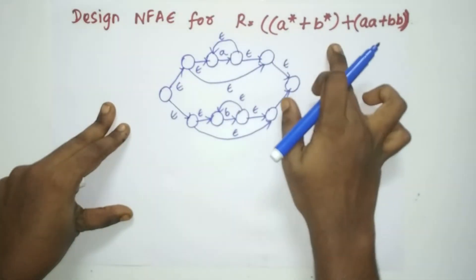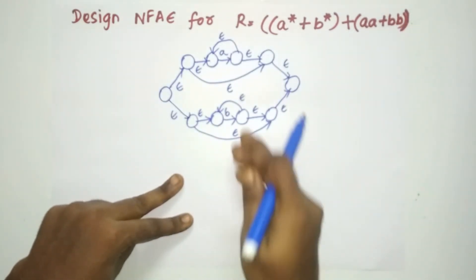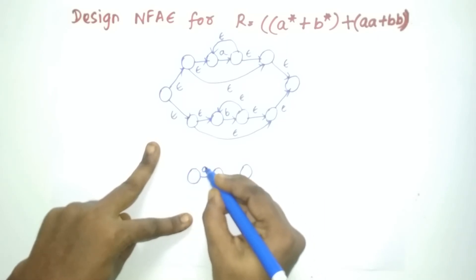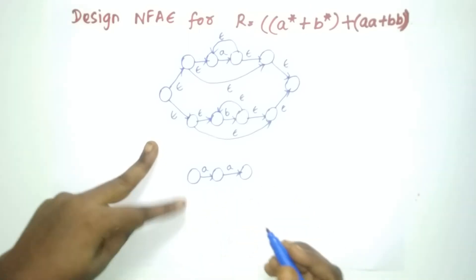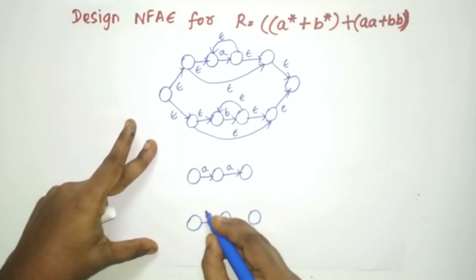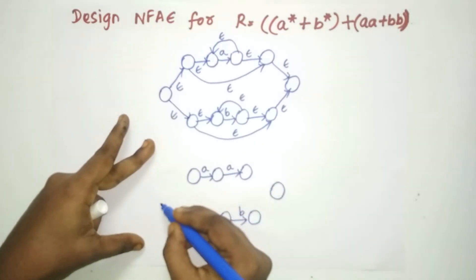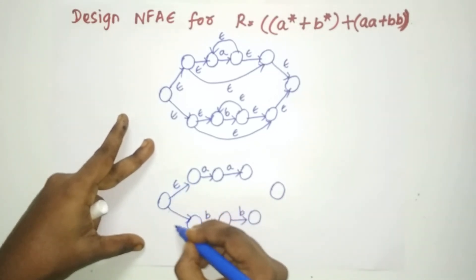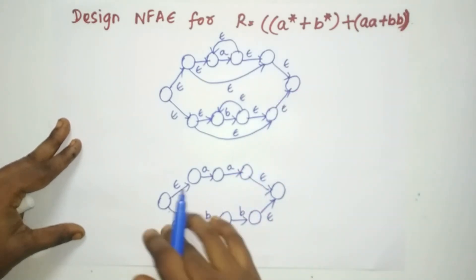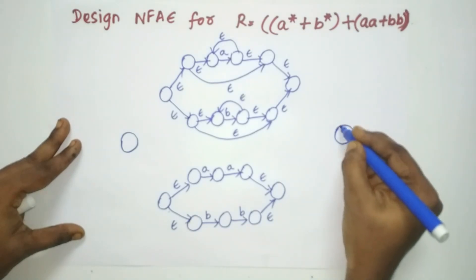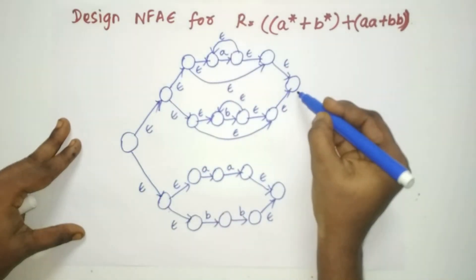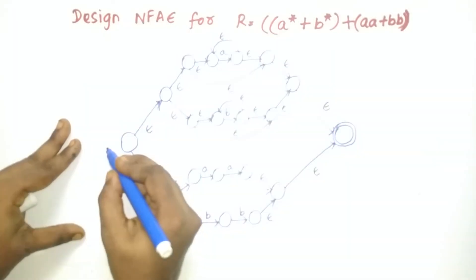Now R2 = AA+BB, which goes on the bottom. Within R2, AA goes on the top and BB goes on the bottom. Create AA by concatenation — draw both A-transitions sequentially; you may add an Epsilon transition between the two A-states if you wish. Then create BB on the bottom similarly. To make AA+BB, create a new initial and final state with Epsilon transitions to and from each sub-machine. This completes R2. Now for the full union of R1 and R2, create yet another new initial and final state, and connect both R1 and R2 with Epsilon transitions from the new initial and to the new final.